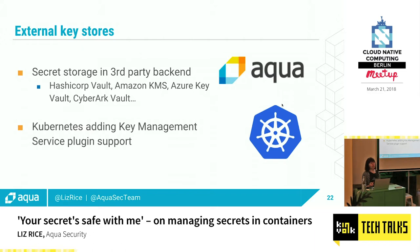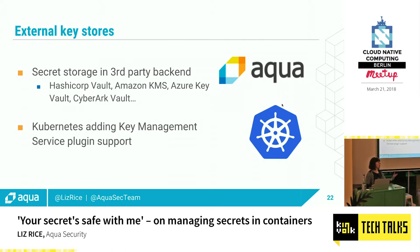An alternative is to store secrets somewhere else rather than etcd, and use something else to pull those secrets and inject them into containers. Aqua is one such provider enabling integration with third-party stores. Kubernetes is also working on it with plugins. The idea is to take advantage of amazing tools like HashiCorp Vault, Amazon or Azure key services, or CyberArk - people who specialize in encrypting and looking after information - rather than rebuilding it yourself. You glue them together either via a tool like Aqua or through the plugins currently being developed.